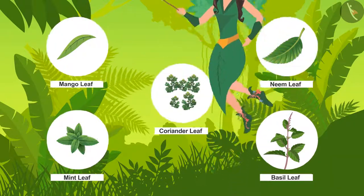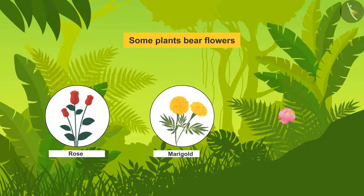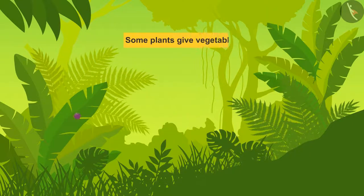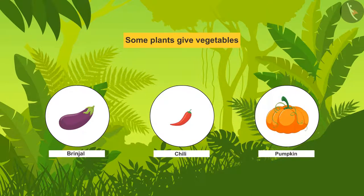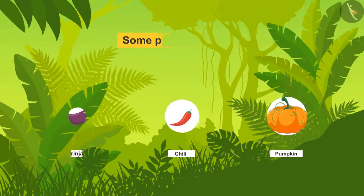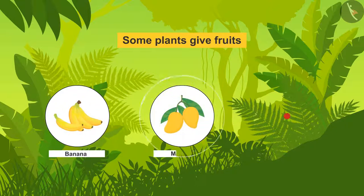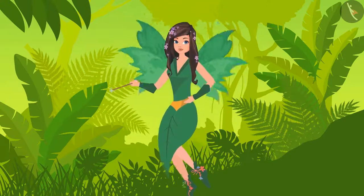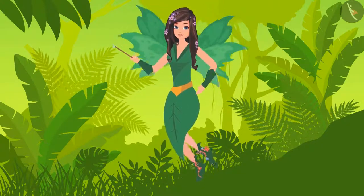Some plants bear flowers, like rose, marigold and lotus. Some plants give vegetables, like brinjal, chilli and pumpkin. Some plants are laden with fruits, like banana, mango and apple. Oh dear, so many kinds of plants with so many different uses!